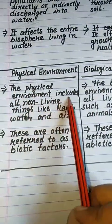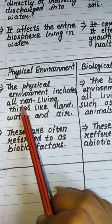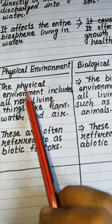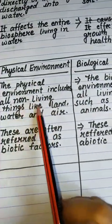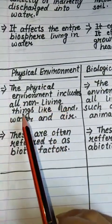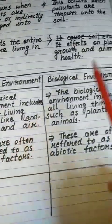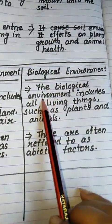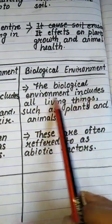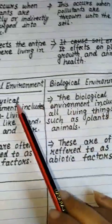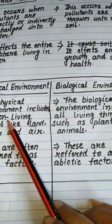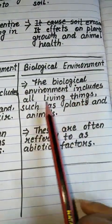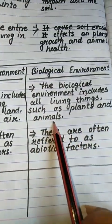Now, the difference between physical environment and biological environment. Point number one: The physical environment includes all non-living things such as land, water, and air. The biological environment includes all living things such as plants and animals.